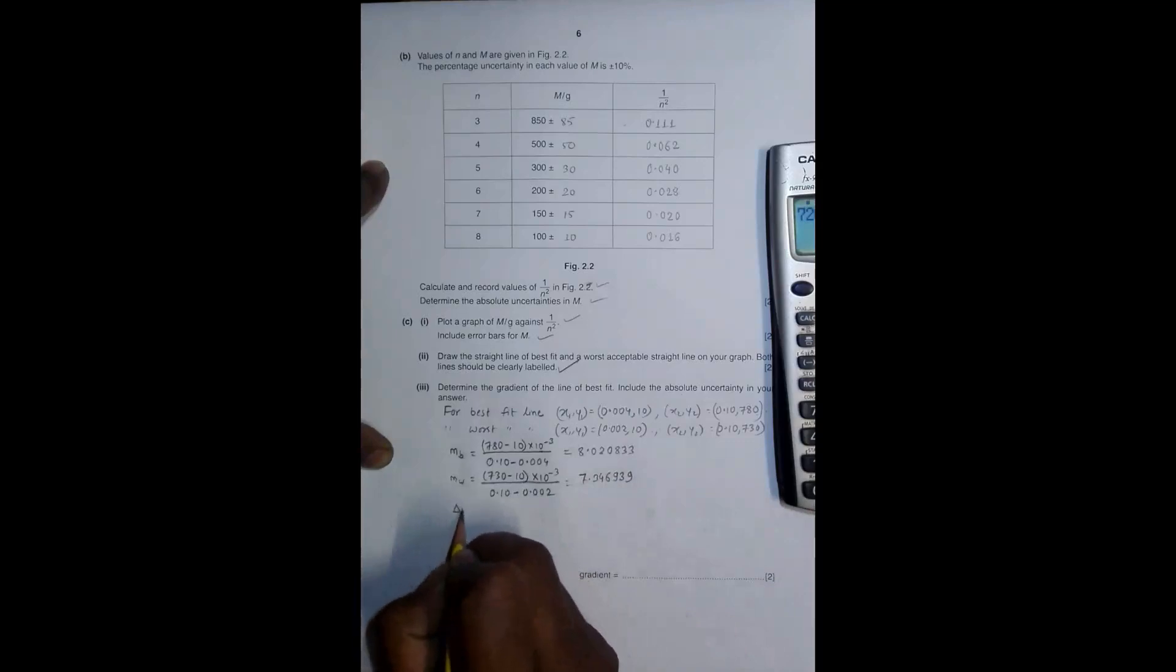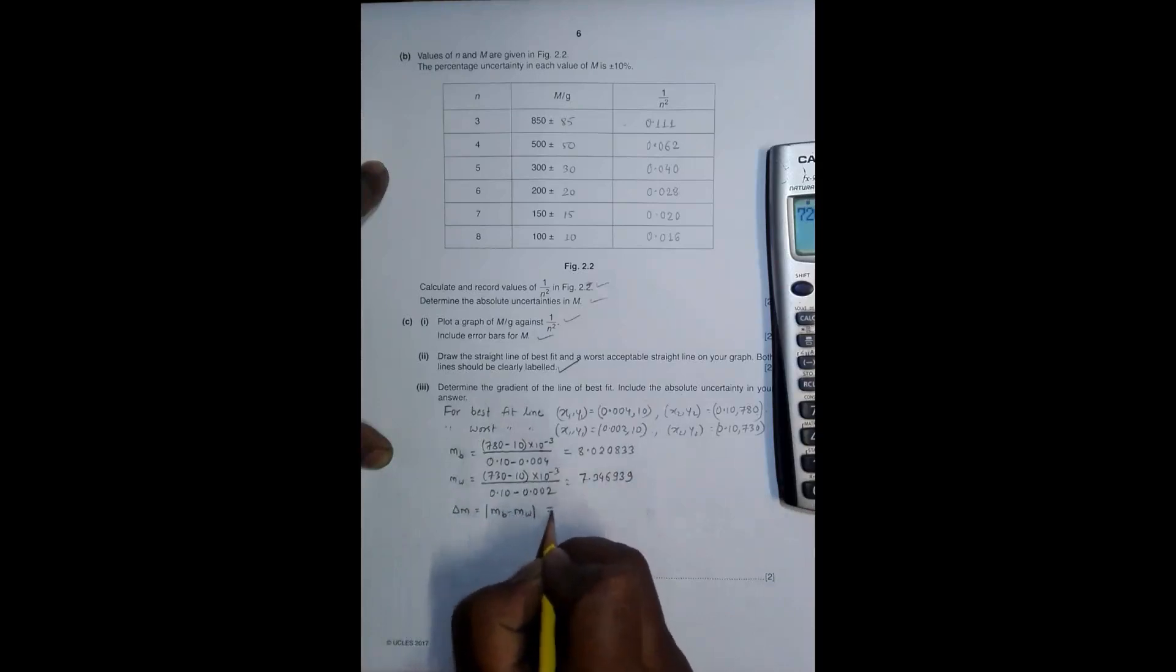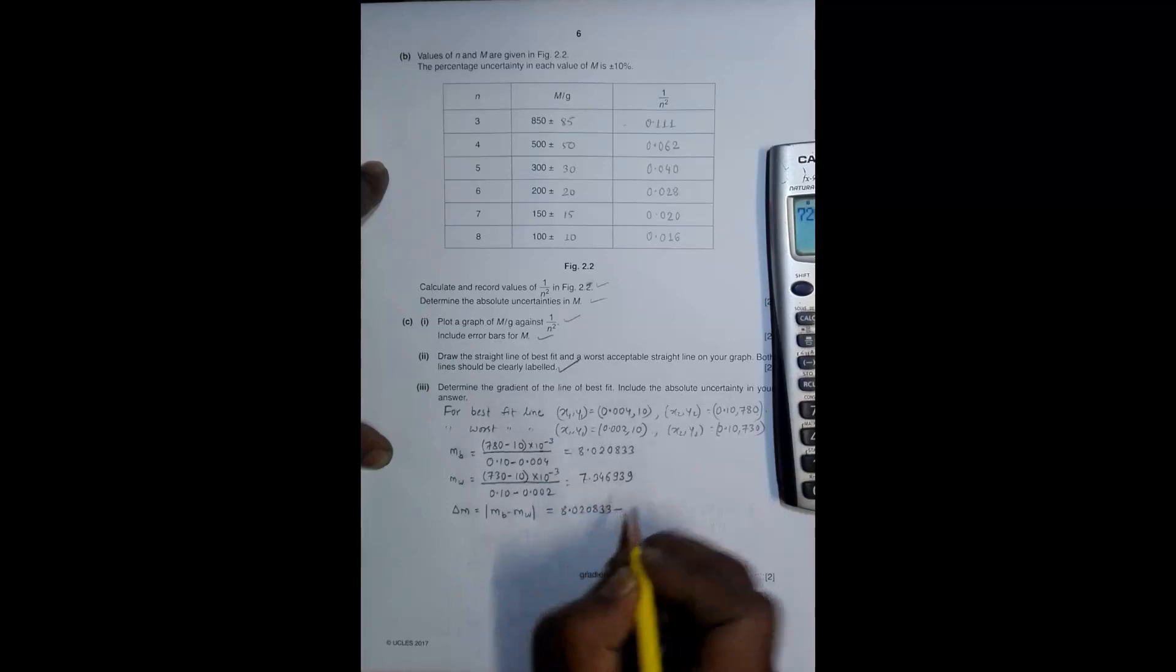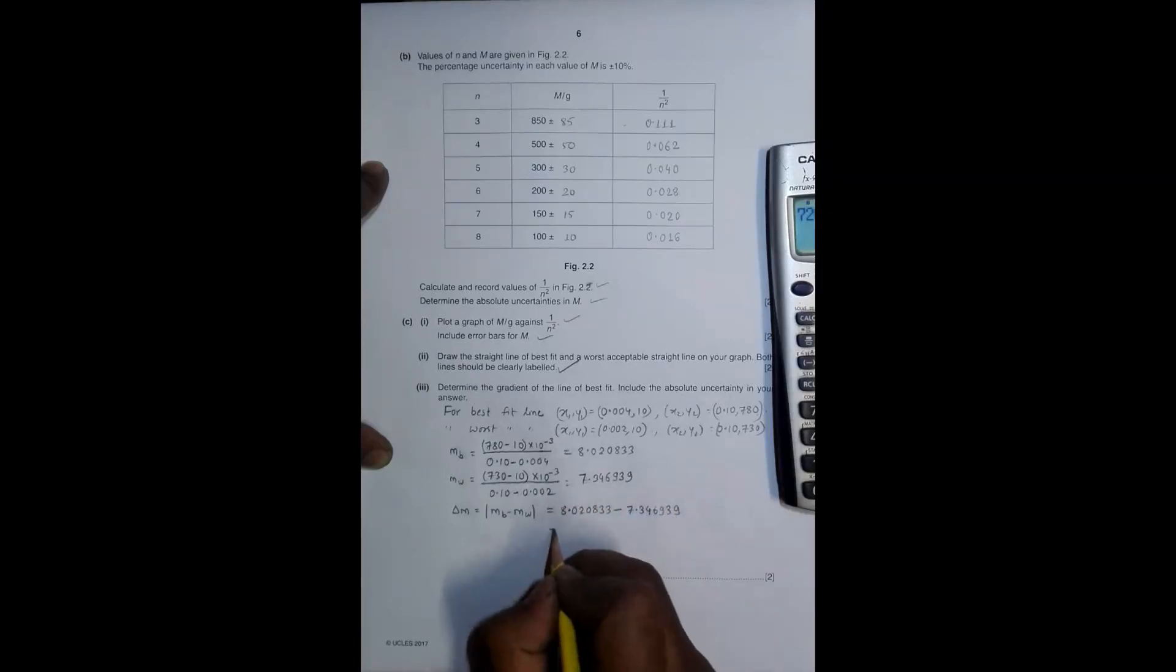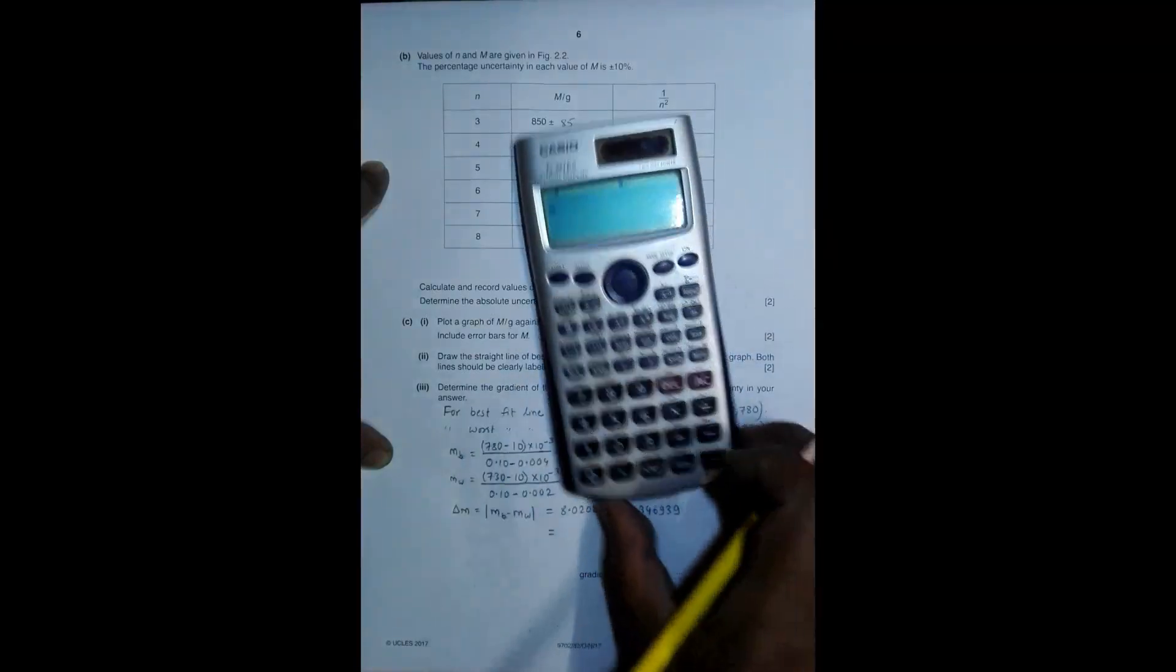So the delta m, which is the uncertainty, is equal to modulus of m best minus m worst, that will be equal to 8.020833 minus 7.346939. So that's equal to